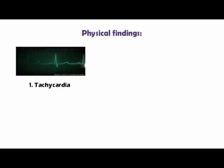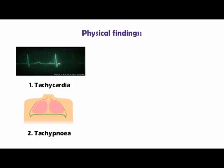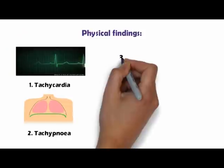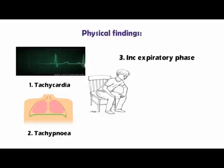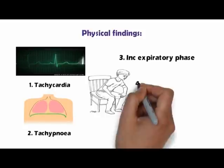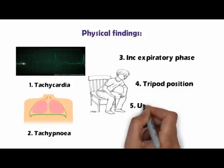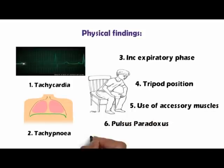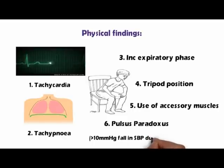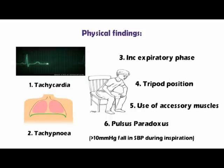Physical findings that suggest severe airflow obstruction in asthma include tachycardia, tachypnea, prolonged expiratory phase of respiration with a decreased I:E ratio, and the seated tripod position with extended arms to support the upper chest. Use of accessory muscles of breathing during inspiration and a pulsus paradoxus greater than 10 mmHg fall in systolic blood pressure during inspiration are usually found during severe asthmatic attacks.